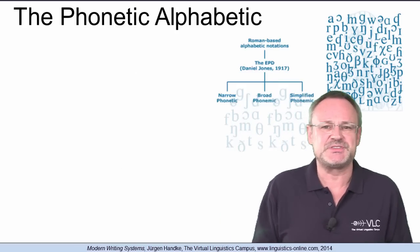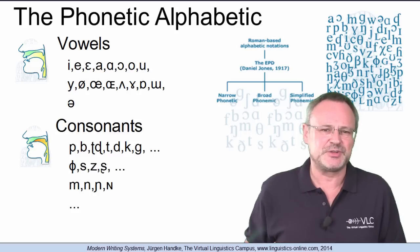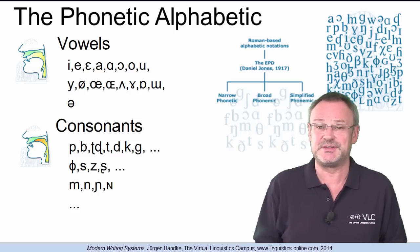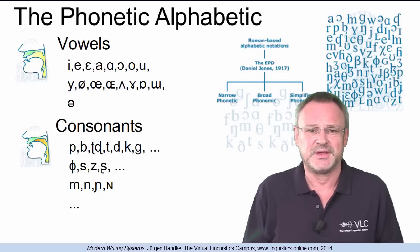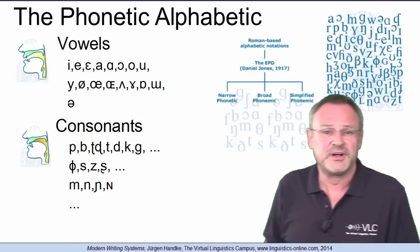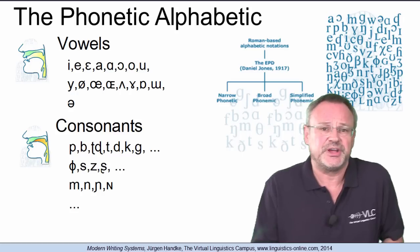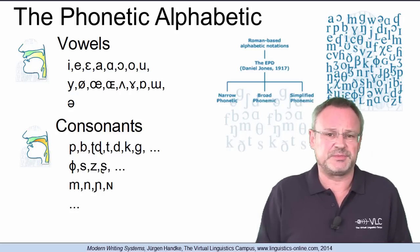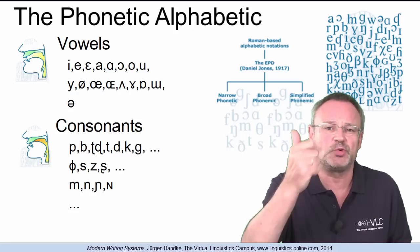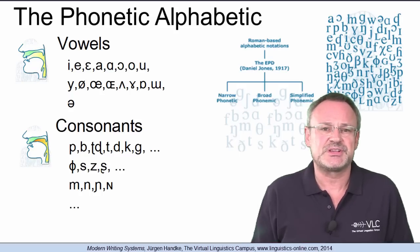To overcome these discrepancies, the International Phonetic Alphabet was introduced in the late 19th century. Here you find a selection of the symbols used in this alphabet. Until today, it is the only alphabet that exhibits a one-to-one correlation between sound and spelling.